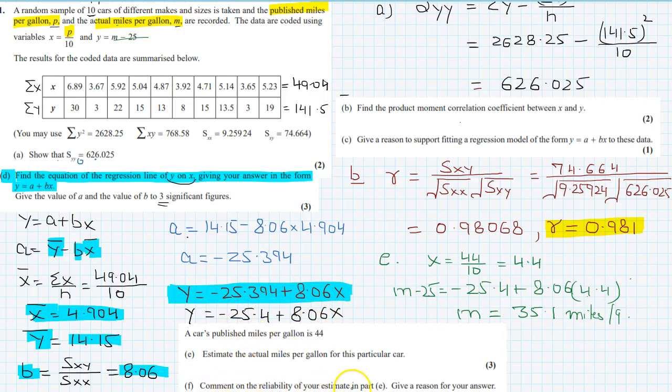Now comment on the reliability of your estimate in part e. In part e, x is 4.4. Now the part f: we are getting x as 4.4, and if I see the range is from 3.65 up to 6.89.